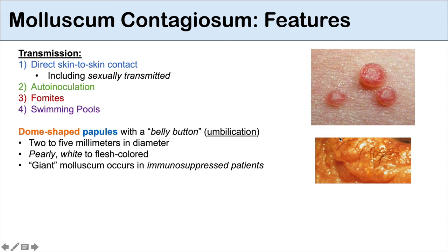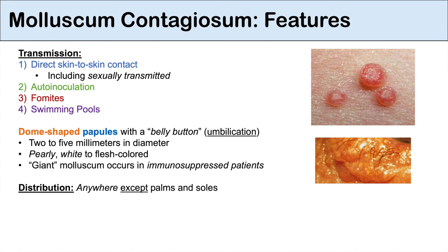Molluscum contagiosum can be distributed anywhere on the body except for the palms of the hands and the soles of the feet. So if you see these vesicular lesions on the palms or soles, it is not molluscum contagiosum. Although it can occur anywhere, molluscum contagiosum typically occurs in skin folds — the axillary folds, the groin folds, the antecubital fossa, and those types of places.